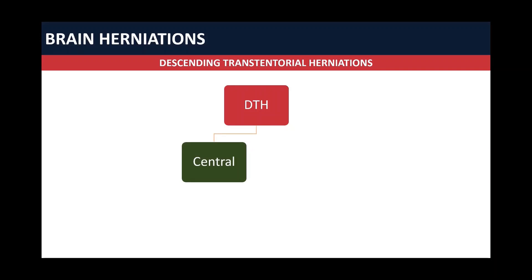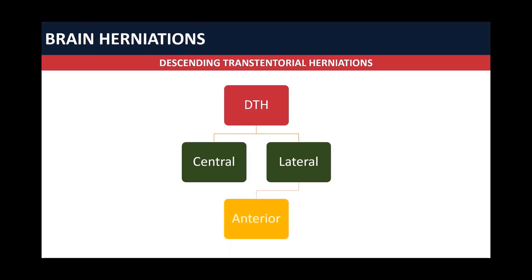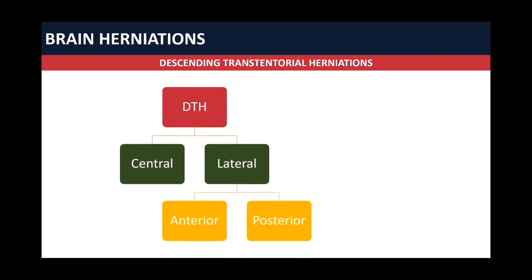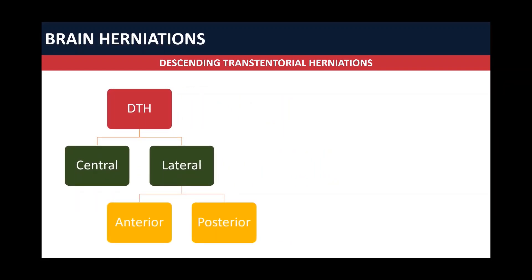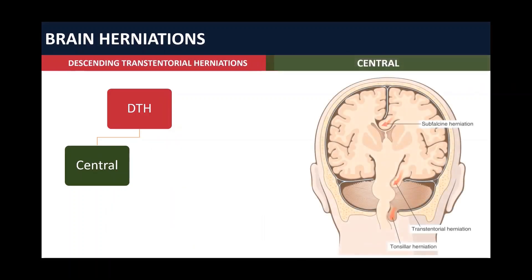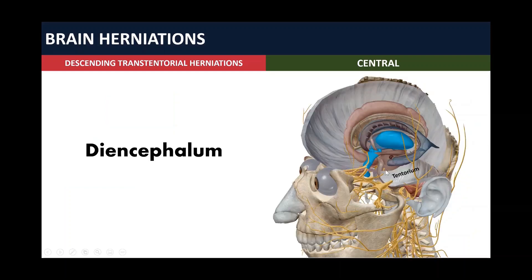The descending trans-tentorial hernia is divided into central and lateral DTH. The lateral DTH can be subdivided into anterior and posterior. We are going to talk about each of these herniations, but firstly we are going to introduce the central one. The central DTH is when structures in the central part pass all the way down through the tentorium — including the diencephalon, highlighted in blue, that goes all the way down.